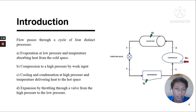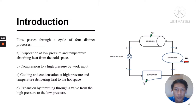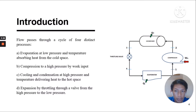Basically there are four key processes in the heat pump. First, refrigeration at low pressure and temperature, absorbing heat from the cold space. Second, compression to high pressure. Third, cooling and refrigeration at high pressure and temperature, delivering heat to the hot space. Lastly, expansion by throttling through a valve from high pressure to low pressure.